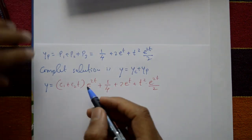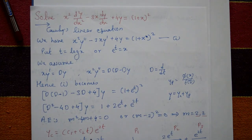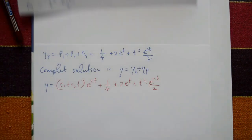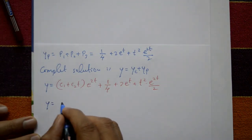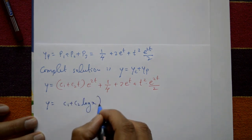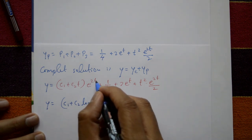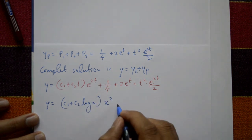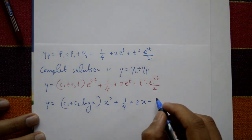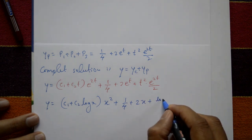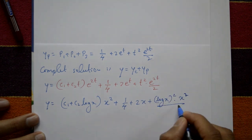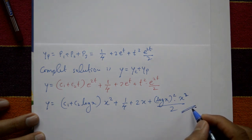The final step is back-substitution: t equals log x and e^t equals x, so e^(2t) equals x². Therefore the complete solution is y equals (c₁ plus c₂ log x)·x² plus 1/4 plus 2x plus (log x)²·x²/2. This is the required general complete solution.